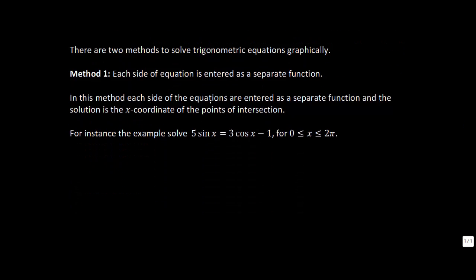In this method each side of the equations are entered as separate functions and the solution is the x coordinate of the points of intersection. So what I mean is we're going to put into Desmos or whatever graphing technology you're using, we're going to go y equals five sine of x for this equation and we're going to put the other side in as another function three cosine of x minus one.